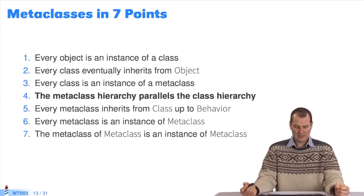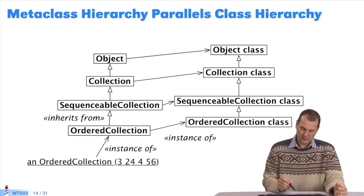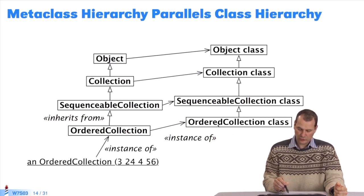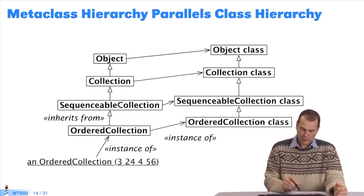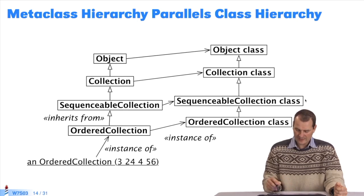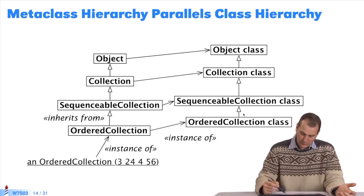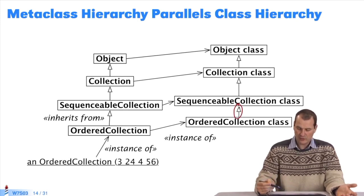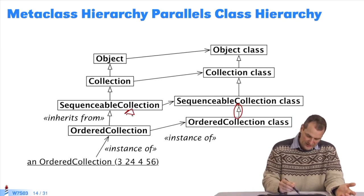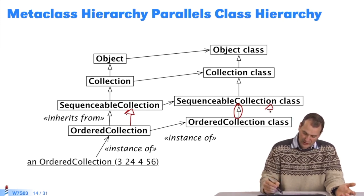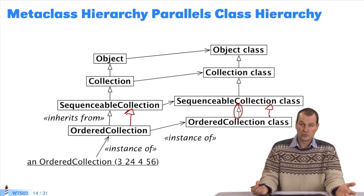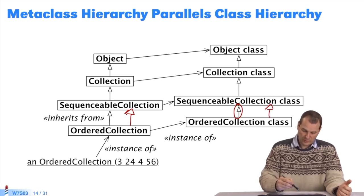Next point. Metaclass hierarchy parallels class hierarchy. Earlier, we explained that ordered collection is an instance of its class, and likewise for sequenceable collection. Now we need to specify the relationship between the two. Since there's an inheritance relationship here, there's also one here. In all cases. That's why we say they are two parallel hierarchies.